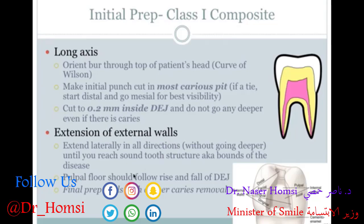The next step is to extend the external wall. After the initial punch cut, extend laterally in all directions without going deeper — until you reach sound structure, i.e., the bounds of the disease. The pulpal floor will generally follow the rise and fall of the DEJ area. The pulpal depth at this point will be somewhere between one-half and two-thirds the length of a 245 burr. Extend the prep around the cusps if possible to avoid the pulp horns and avoid weakening tooth structure unnecessarily.